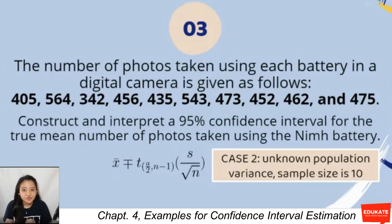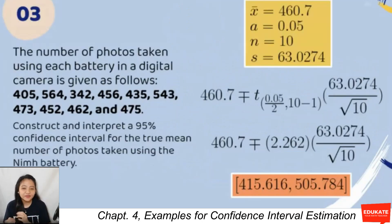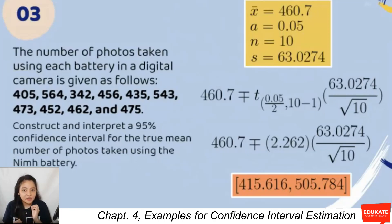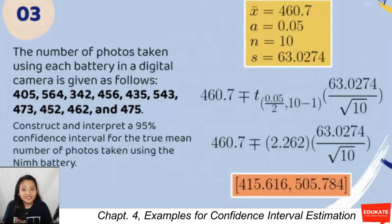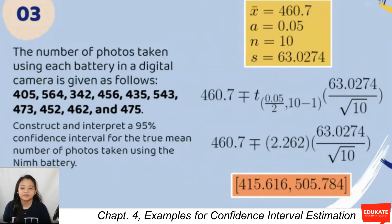With 10 data samples and unknown population variance, this falls under case two. We use the formula: sample mean ± t-table tabular value × SE. Adding all data and dividing by 10 gives a sample mean of 460.7. The 95% confidence level gives alpha = 0.05, and sample size n = 10.